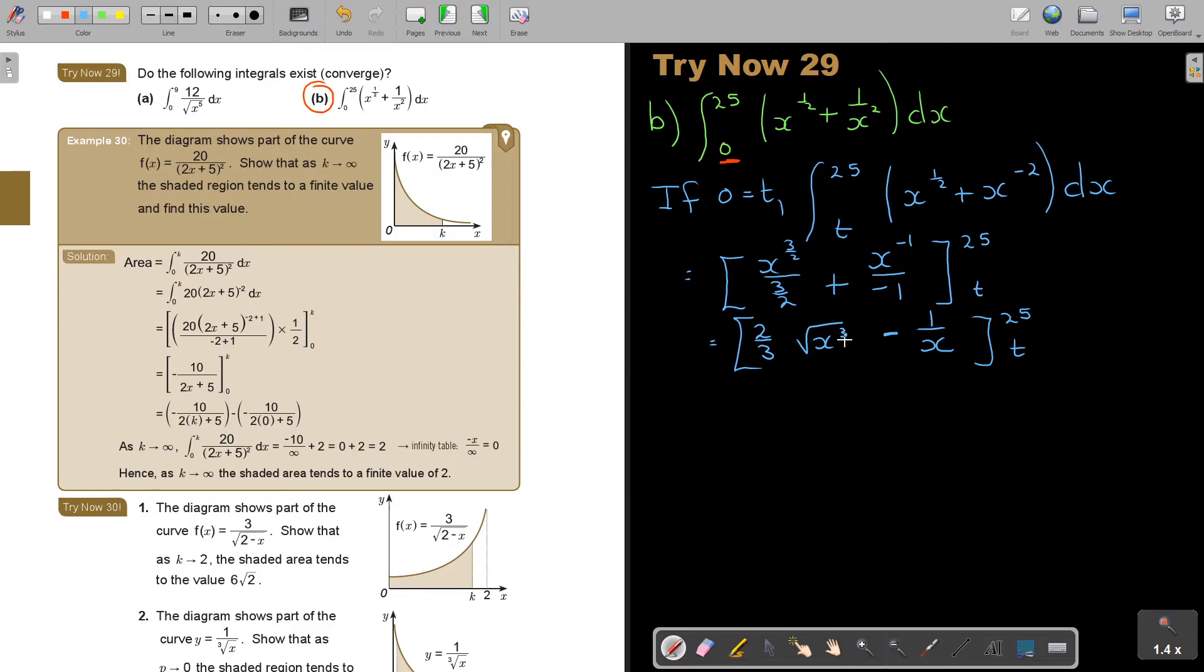Now I'm going to substitute, so it's going to be 2 over 3, and then it's going to be 25 to the power of 3 over 2, minus 1 over 25, that will be the first one. And then minus: 2 over 3, and that's going to be T to the power of 3 over 2, minus 1 over T.